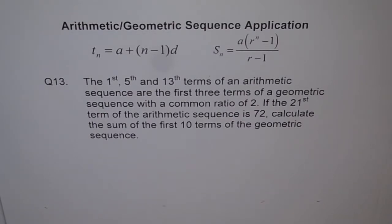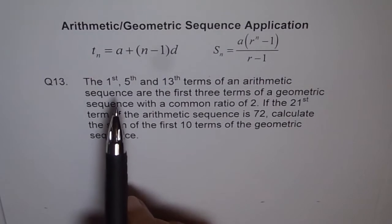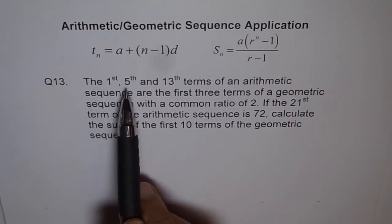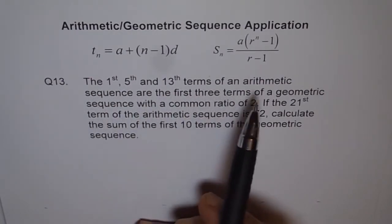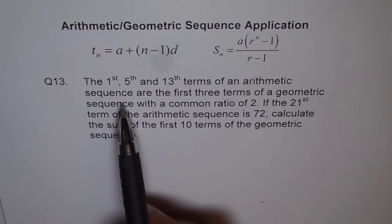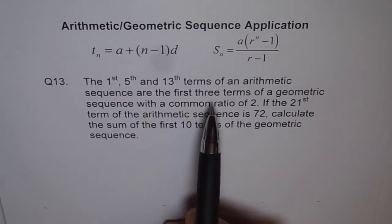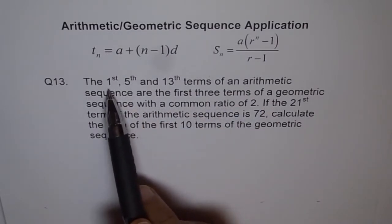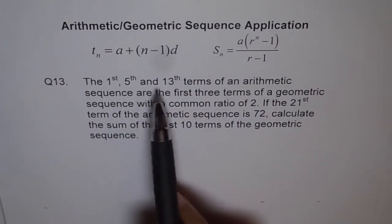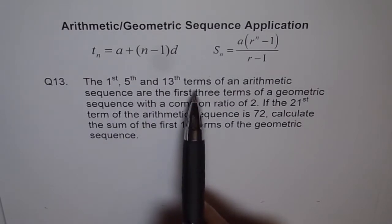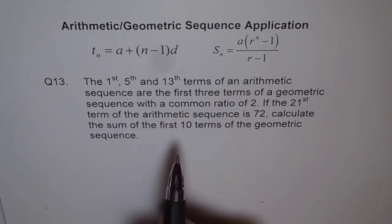Let's try to understand what the question is. The first, fifth, and thirteenth terms of the arithmetic sequence are the first three terms of the geometric sequence. So let's find what the first, fifth, and thirteenth terms of the arithmetic sequence are.